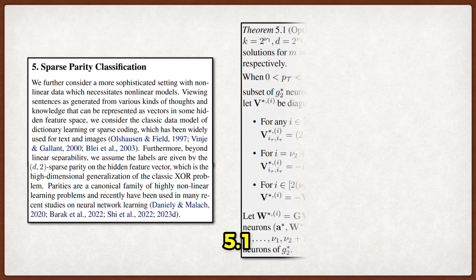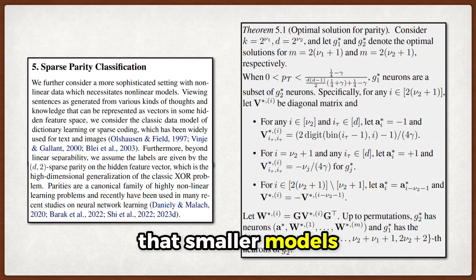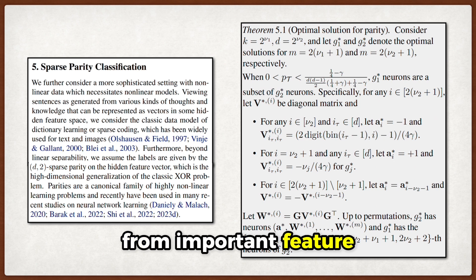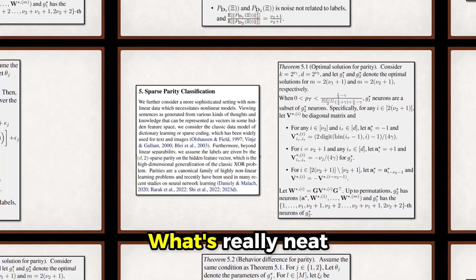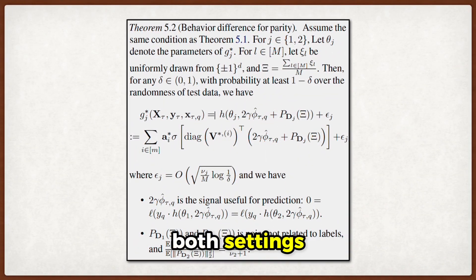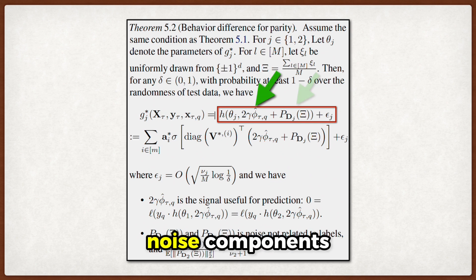They find in theorem 5.1 that smaller models with fewer heads focus on learning patterns from important feature pairs, while larger models start learning patterns from less important pairs too. What's really neat is that in both settings, they can decompose what the model sees into signal and noise components.